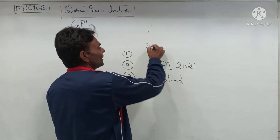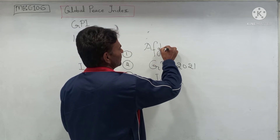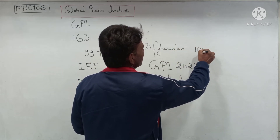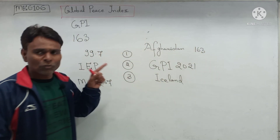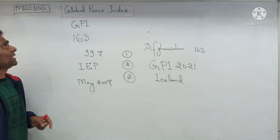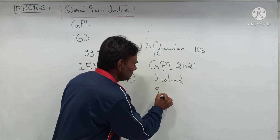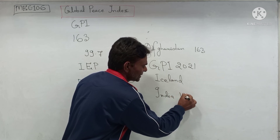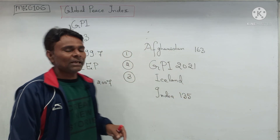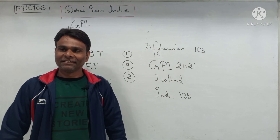Afghanistan ranked 163rd position, making it the least peaceful country in the world. India got 135th place among 163 countries in GPI 2021. Thanks for watching.